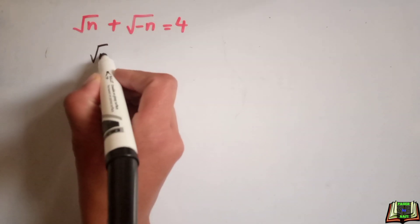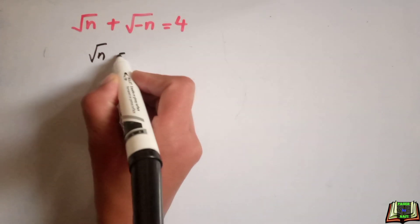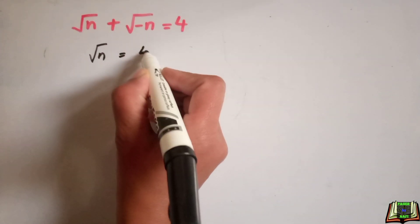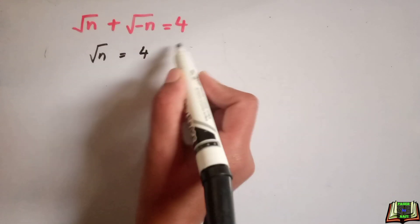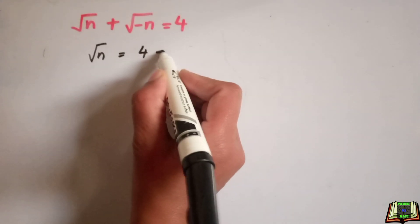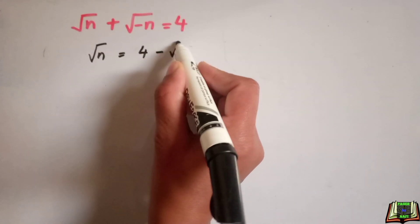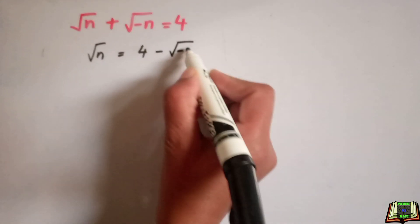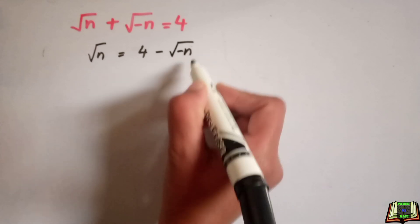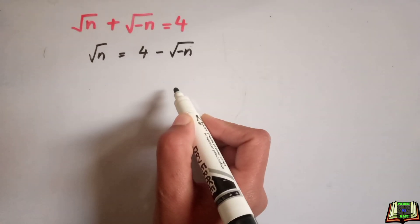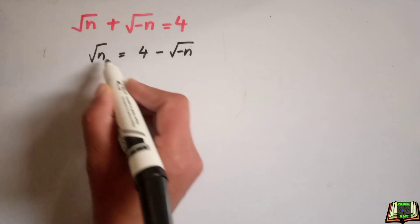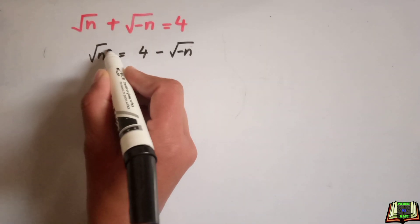First of all, we are going to write the given equation as square root of n is equal to 4, and we will take square root of minus n to the right hand side, so it will become negative.